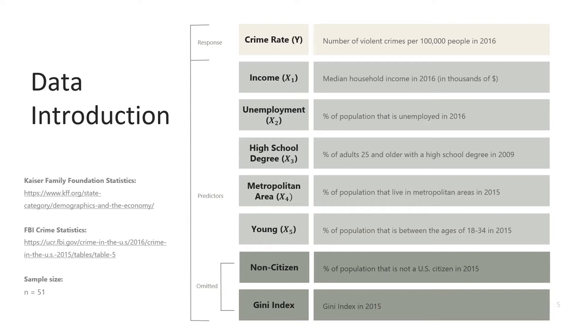A few of the predictors that I chose to omit from the model are non-citizen, which is the percent of the population that is not a U.S. citizen, and Gini index, which is a measure of income disparity across a population. Sometimes this index may overstate income inequality and can obscure important information about income distribution, so for simplicity's sake, I chose not to move forward with that predictor.